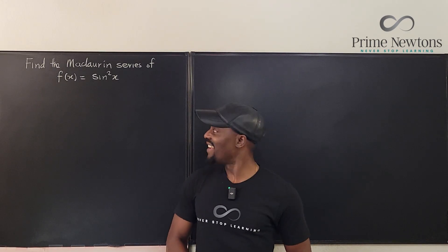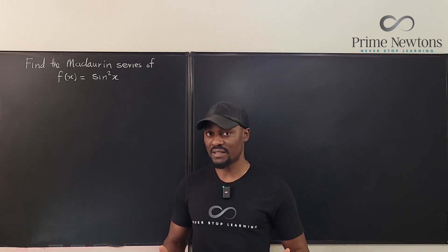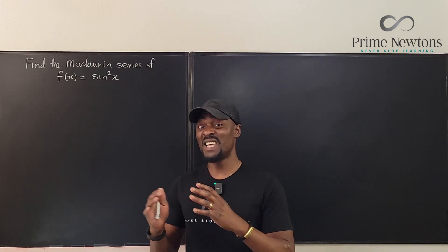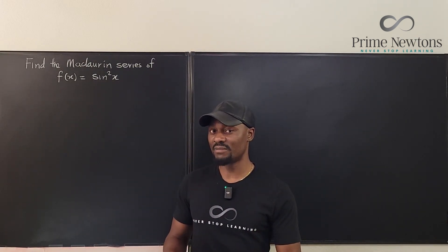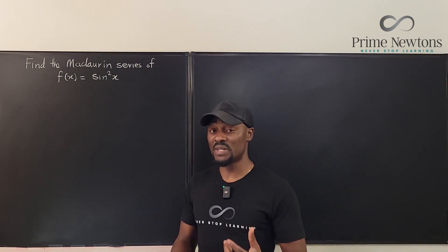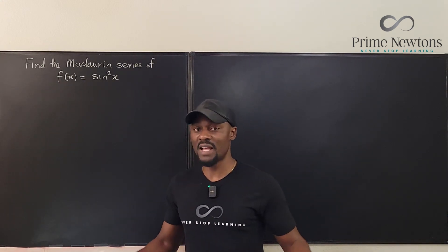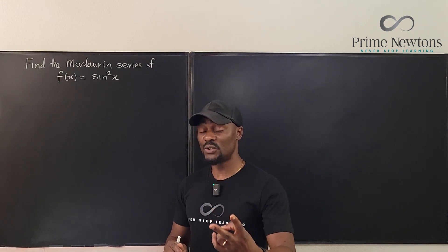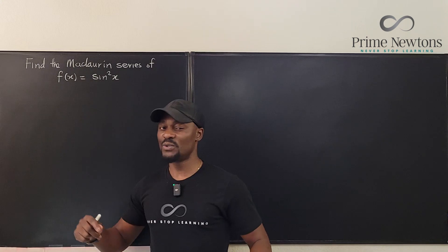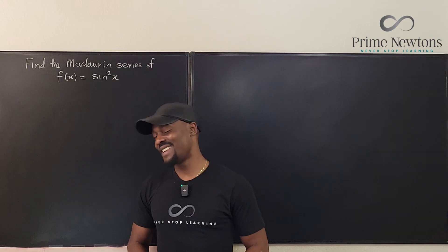Welcome to another video. We're going to find the Maclaurin series of sine squared x. Remember, a Maclaurin series is a Taylor series centered at zero. Whatever formula you use to get a Taylor series is what you use for a Maclaurin series — you just plug in zero every time. I intend to show you two ways to do it: the traditional way of taking many derivatives, or using a trig identity based on a previous knowledge of Maclaurin series.